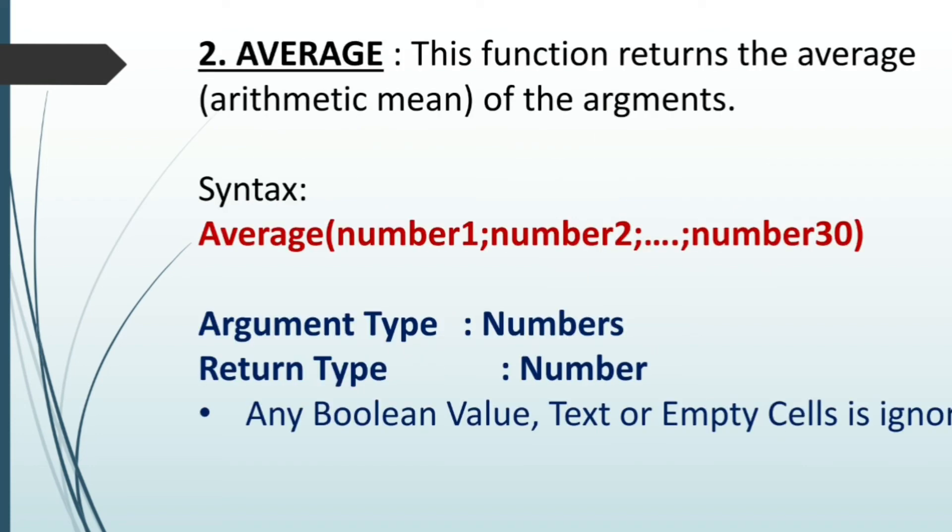The next function is average. This function returns the average or arithmetic mean of the arguments. The syntax here is average number 1, number 2, up to 13. Here, the arguments are of type numbers and it returns a value number. If any Boolean value or a text or empty cell is entered as an argument, it would be ignored.